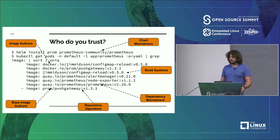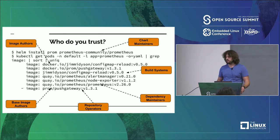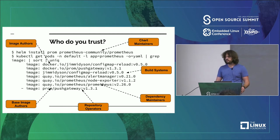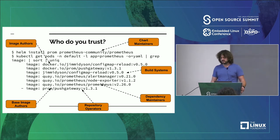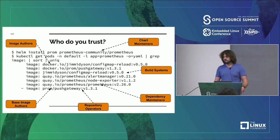Right now it's a mess. This is just a little example: the first Helm chart on the CNCF Artifact Hub. If you install this chart and look at all the images that get pulled and start running in your cluster, you're trusting a whole bunch of different things, a whole bunch of different people, a whole bunch of different systems. Every single one of these could be tampered with, attacked, or could be malicious. This is kind of the opposite of zero trust — we're trusting dozens of systems we don't know anything about.